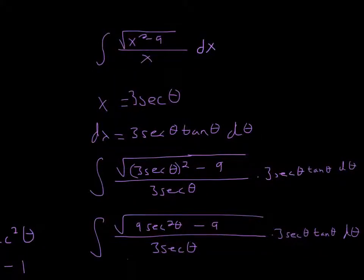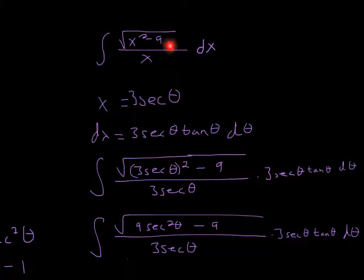For this integral, what we can do is trig substitution. We let x equal 3 secant theta. The 3 comes from the 9 under the radical — specifically, it's the square root of 9, so it'll be 3.